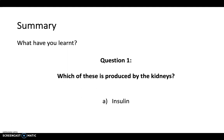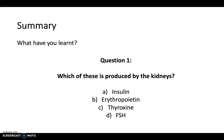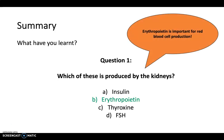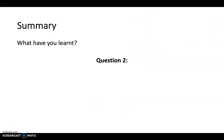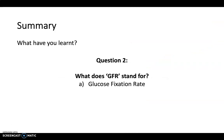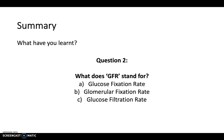Let's have another look at those questions. Which of these is produced by the kidneys: insulin, erythropoietin, thyroxin, or FSH? The answer is erythropoietin, which is secreted by the endothelial cells and is important for red blood cell production.